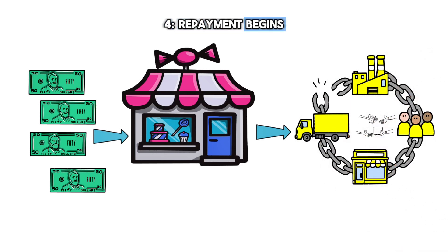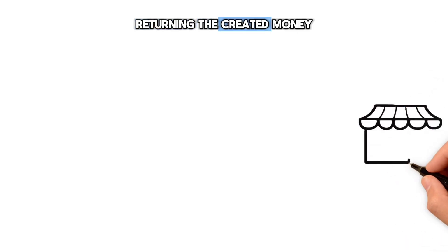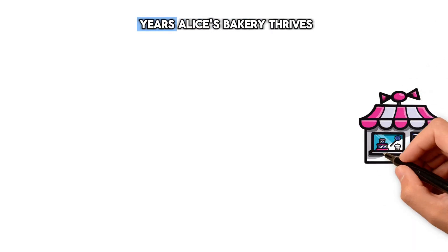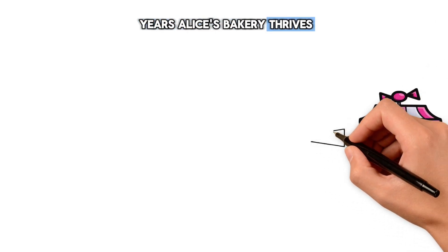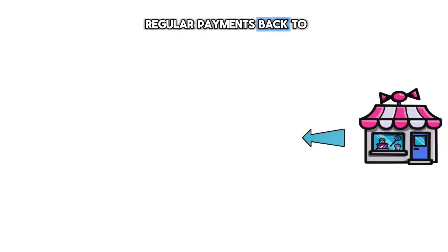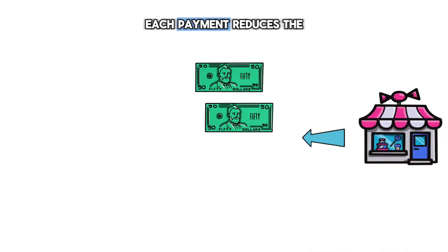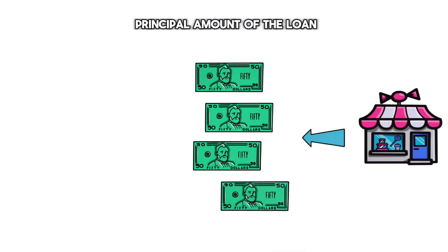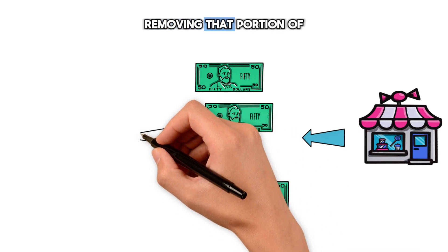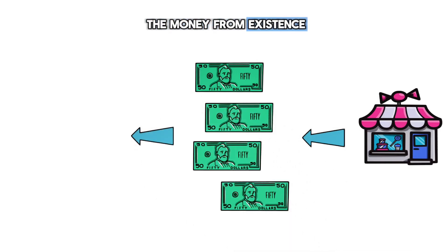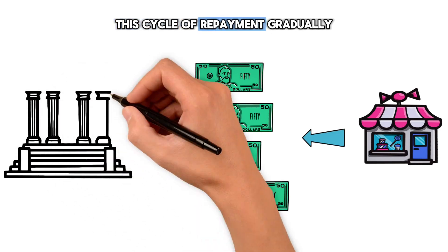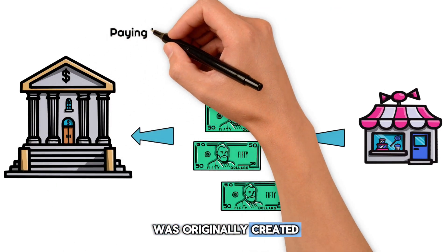4. Repayment Begins. Returning the created money: over the next few years, Alice's bakery thrives, allowing her to make regular payments back to the bank. Each payment reduces the principal amount of the loan, effectively removing that portion of the money from existence. This cycle of repayment gradually extinguishes the money that was originally created.